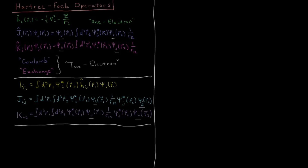For each of these operators you can have expectation values which lead to some form of energy. The one-electron energy is the integral of psi*_i times the one-electron operator acting on psi_i — that orbital's kinetic energy and attraction to the nucleus. For two orbitals i and j, the Coulomb integral J_ij is the electron density of electron one times the electron density of electron two interacting through 1/r_12. Then we have the exchange integral K_ij, which exchanges the i and j indices within the non-conjugate orbitals.